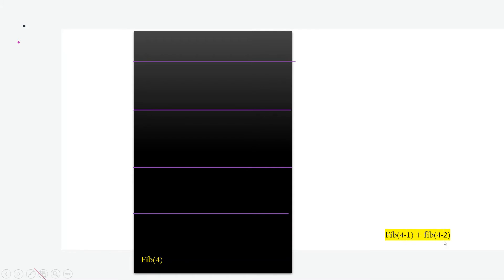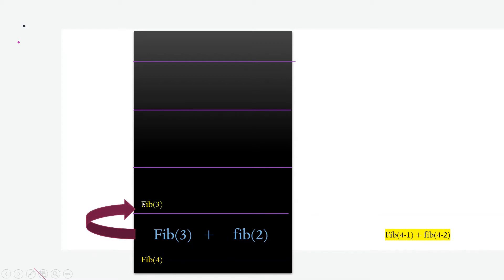Let's see the recursion concept. We have the fourth element in the Fibonacci series. If we look at that element, we have two numbers. The fourth position minus 1 is the third position, and fourth position minus 2 is the second position. So fib(3) plus fib(2) equals fib(4) — that is the fourth position number. We know what fib(3) and fib(2) are, so let's call fib(4) and fib(3). What is fib(3)? It is fib(2) plus fib(1). We know fib(2) and fib(1).